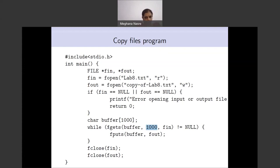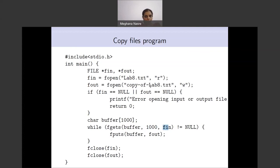fgets is a very useful function — it allows us to read from the stream which we have opened for lab8.txt and copy it into the appropriately named file. This program is fine, but the only thing it doesn't do is take the two file names as arguments — lab8.txt and copy_of_lab8.txt are still hardcoded and not passed as arguments to main.